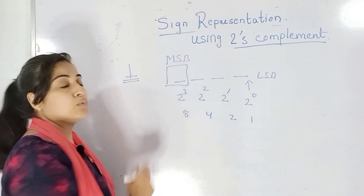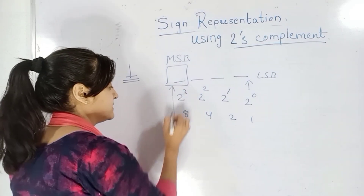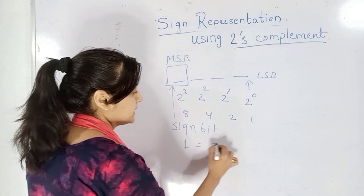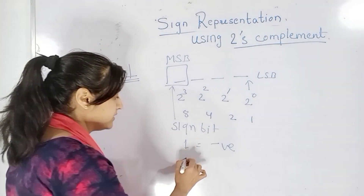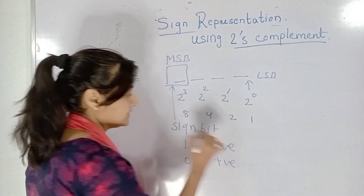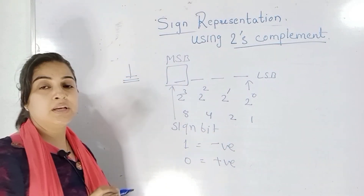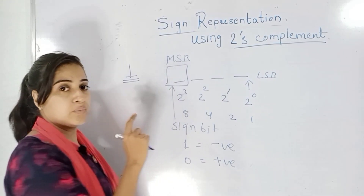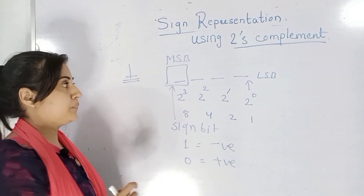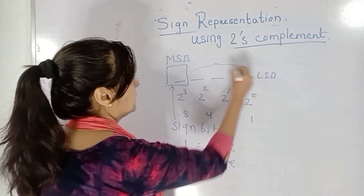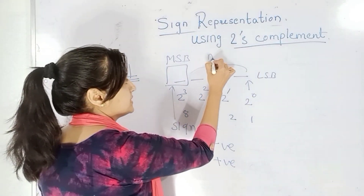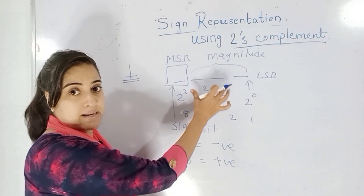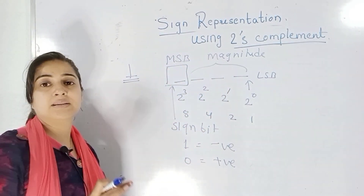In a signed number, this MSB plays a very important role because it is considered as the sign bit. If the MSB is 1, it means that the number is negative. If the MSB is 0, it indicates that the number is positive. So just by looking at the MSB, one can easily figure out whether a signed number is positive or negative. The remaining bits are treated as magnitude bits, which represent what the number actually is.